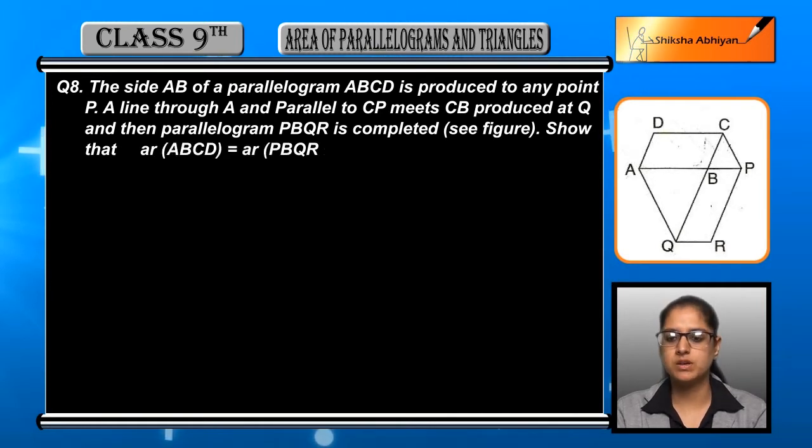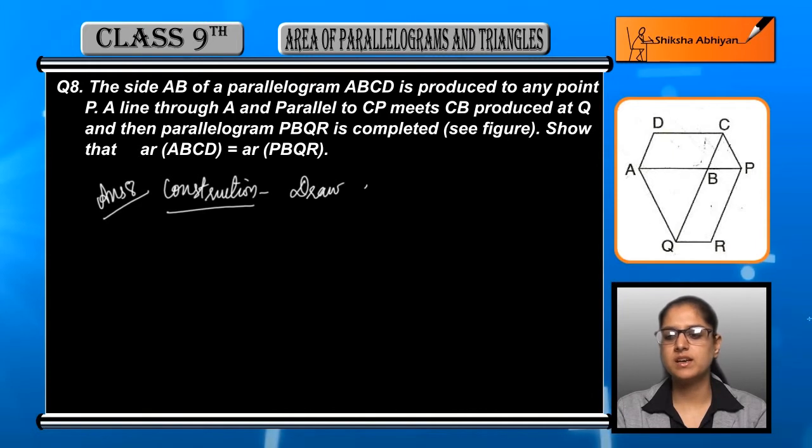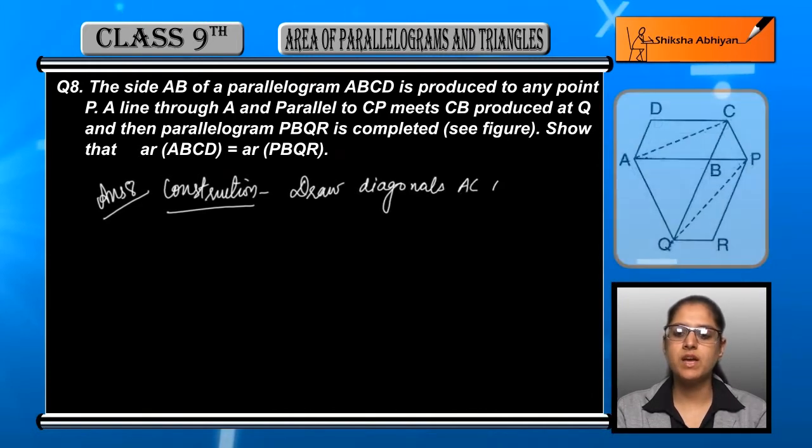We will draw the figure. We are given two parallelograms ABCD and PBQR. In both we will draw diagonals. The diagonal of ABCD is AC and the diagonal of PBQR is PQ. To prove this, we have AQ and CP parallel to each other.